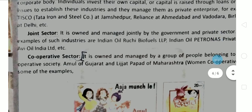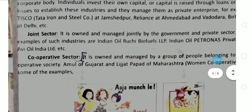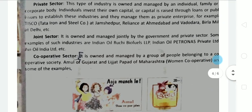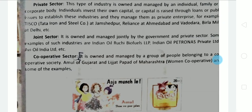Joint sector industries are owned and managed jointly by the government and the private sector both. The government and an individual person make an agreement to run an industry together. Examples of joint sector industries include Indian Oil-Ruchi Biofuels LLP and Indian Oil Patrons.